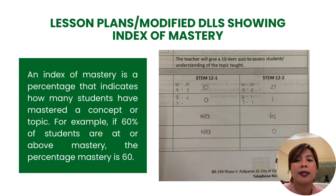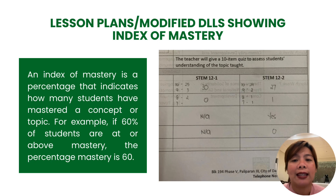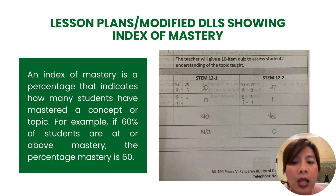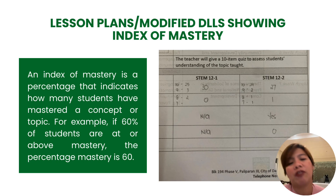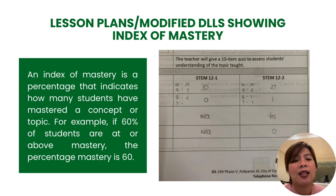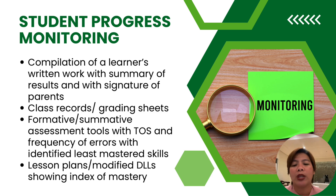Another MOV is the lesson plan or modified DLL showing the Index of Mastery. The Index of Mastery is a percentage that indicates how many students have mastered a concept or topic. For example, if 60% of students are at or above mastery, the percentage mastery is 60%. In our DLL, there is a reflection section where we record the Index of Mastery. When we give quizzes after discussion, we accomplish the Index of Mastery, which tells us whether we should reteach the topic or move on to the next lesson.